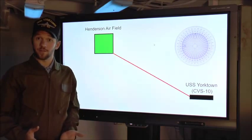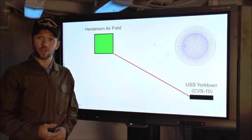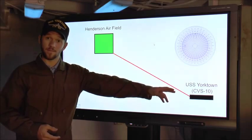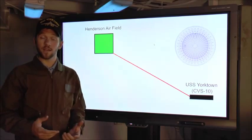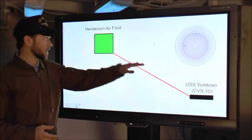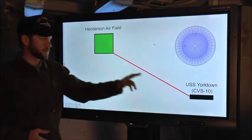Now that we've talked about direction and degrees, let's pretend that you're an air traffic controller stationed on the USS Yorktown. Your task is to direct an aircraft from the USS Yorktown to Henderson Airfield along this flight path.